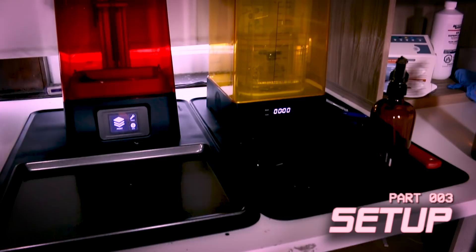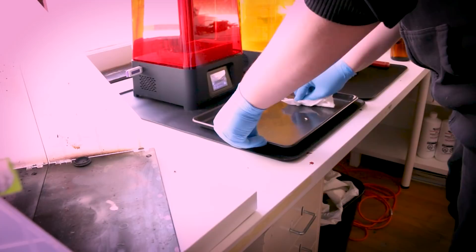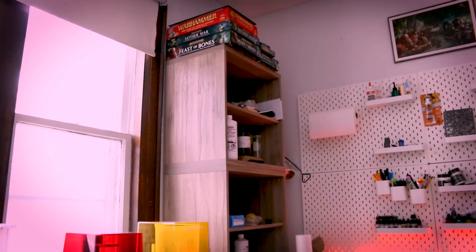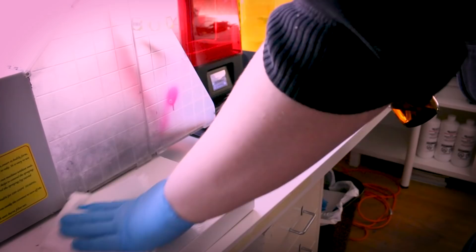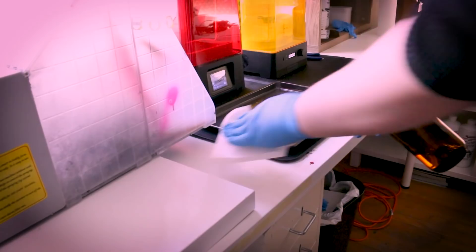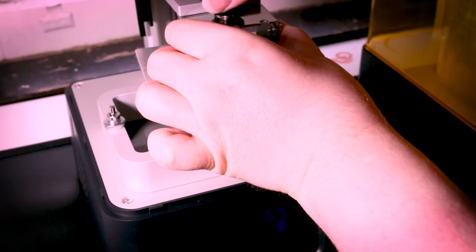Once I had everything in hand, I needed a messy workspace separate from my clean workspace so I didn't accidentally get resin on my computer or my painting station or anything else. So I created a separate space in the corner of the studio for this task. I put the printer as well as the wash and cure machine right in front of the window to help vent the fumes, and I've even got my airbrush spray booth set up right next to it so I can point it at the printer and get even more ventilation if I want to.